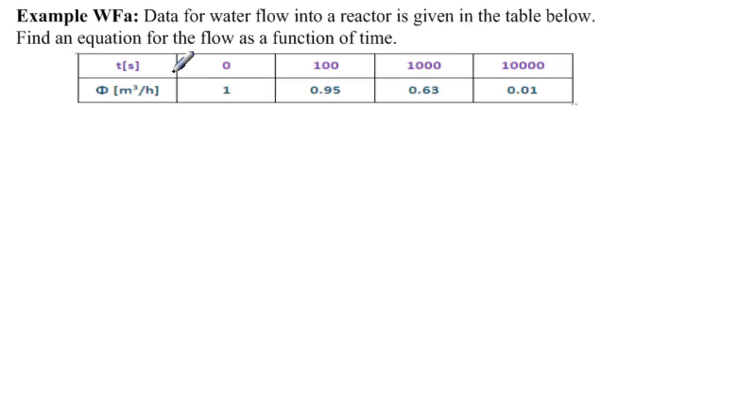So we see that we have four pieces of data. Time is in seconds, and flow is in meters cubed per hour. So these are not the same unit. That's the first thing we always check, units. The next thing we look at after having solved this twice is that in part B,